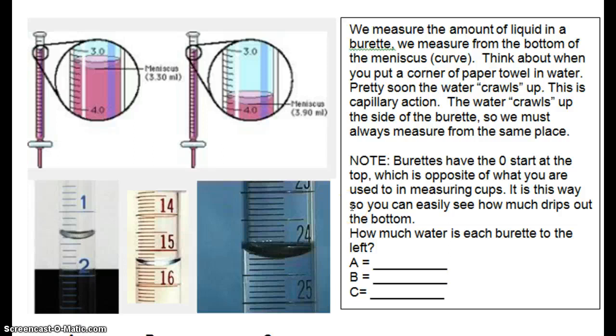We measure the amount of liquid in a burette. We measure from the bottom of the meniscus. Meniscus is a fancy word for a curve. If you wear contact lenses, they probably have this shape, and right there would be the bottom of the meniscus. Think about when you put a corner of paper towel in water. Pretty soon the water crawls up. This is capillary action. The water crawls up the side of the burette just like it crawls up a Kleenex or a paper towel, so we must always measure from the same place. All right, note, burettes have the zero start at the top, which is the opposite of what you are used to in measuring cups. It is this way so you can easily see how much drips out the bottom.